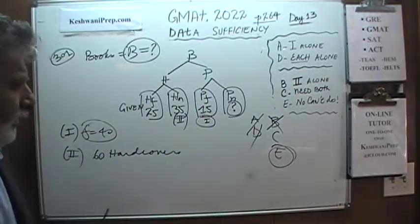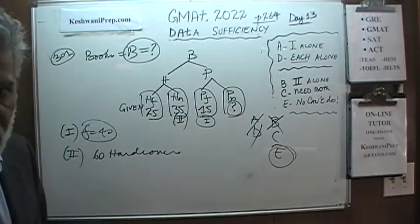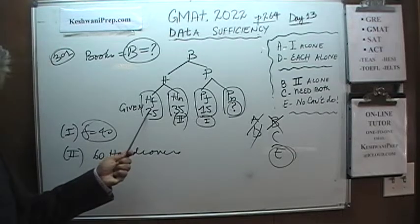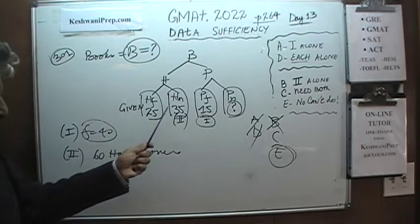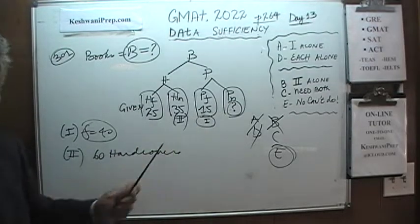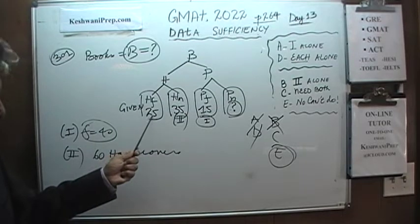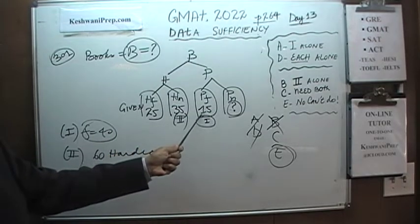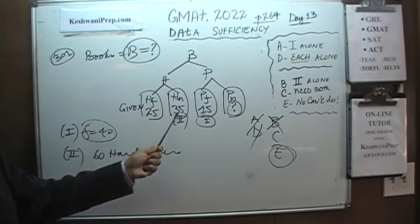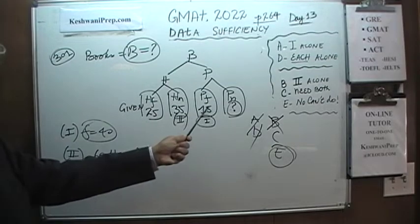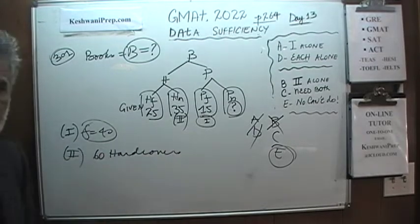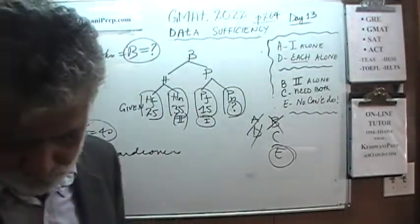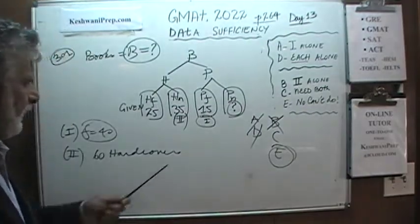It's a very straightforward game. There are four pieces of information needed. They give us one in the problem itself, one from the first statement, and one from the second statement — that's three. The fourth piece of information is still missing. They're just playing games with you. The answer is E.